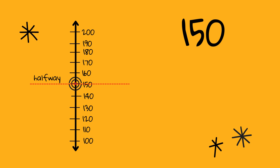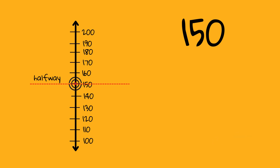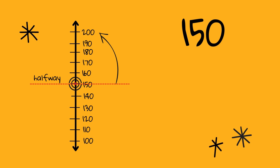What about 150? The rule is that if it's halfway or above, we round forward or up. So 150 is halfway, so we would round to the nearest 100, which is 200.